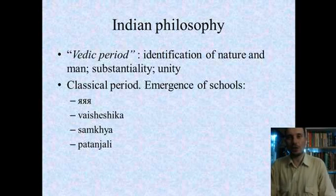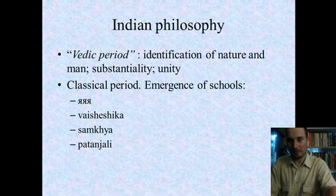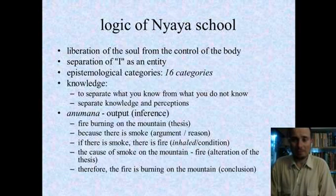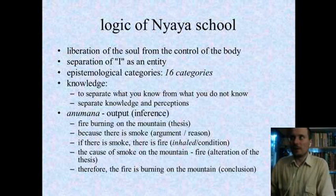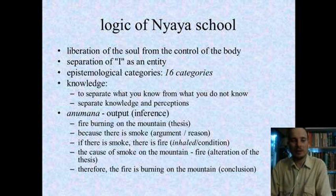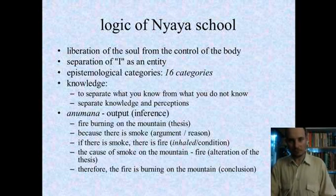Indian philosophy: the Vedic period — an ancient period — involved identification of nature and substantial unity, though many texts were lost. Traditions were held in memory and retold. The classical period had schools like Nyaya, Vaisheshika, Samkhya, and Patanjali. In the Nyaya school's logic, before the 20th century most logic studies included epistemology — studying logic was also studying epistemology, with formal and informal elements closely intertwined.